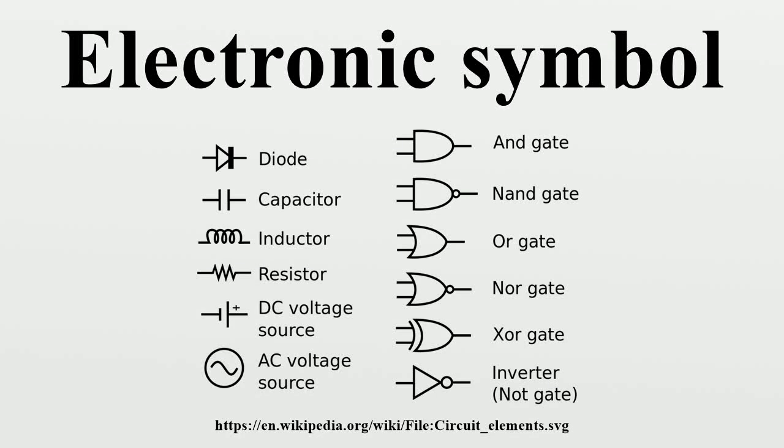An electronic symbol is a pictogram used to represent various electrical and electronic devices in a schematic diagram of an electrical or electronic circuit. These symbols can vary from country to country, but are today to a large extent internationally standardized.